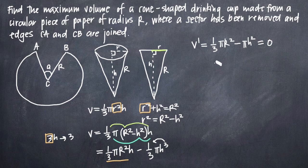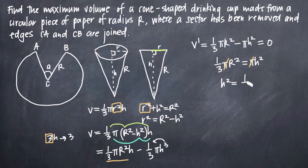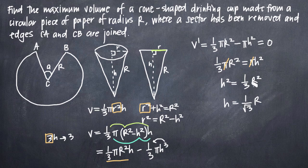We set this equal to zero and solve for h. Adding pi h squared to both sides gives one-third pi R squared equals pi h squared. Dividing both sides by pi, pi cancels, leaving h squared equals one-third R squared. Taking the square root of both sides, h equals 1 over the square root of 3 times R. We only take the positive value — a negative h would mean the cone doesn't exist in actual space.